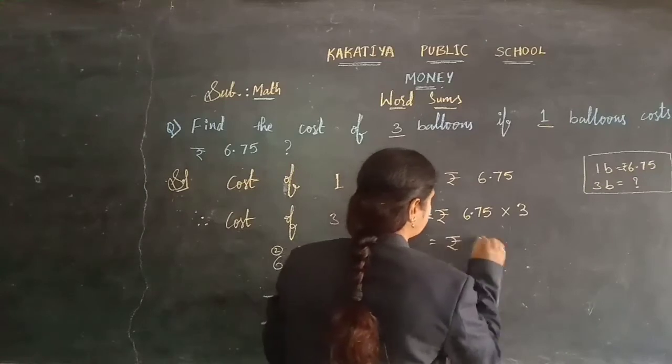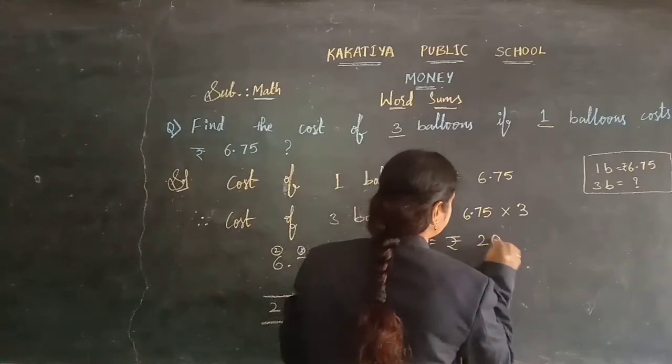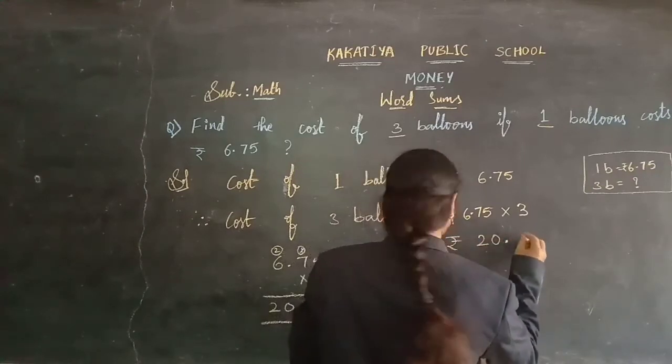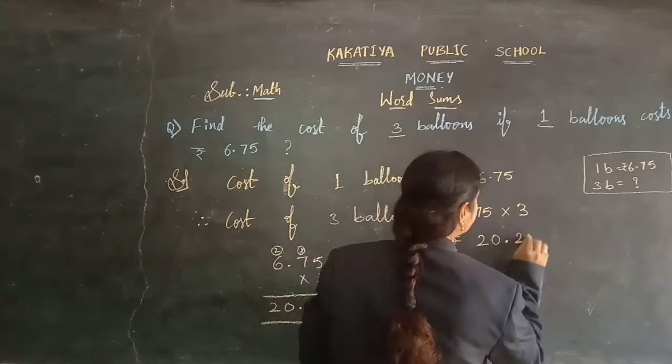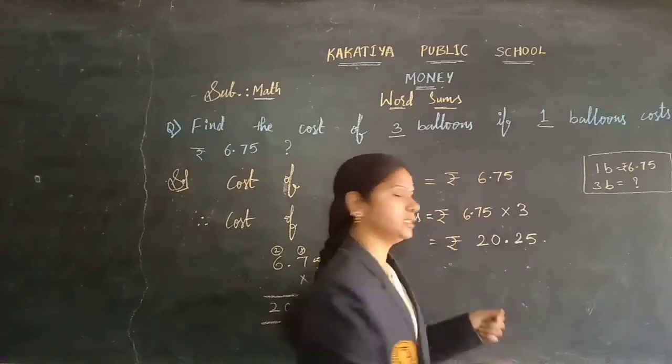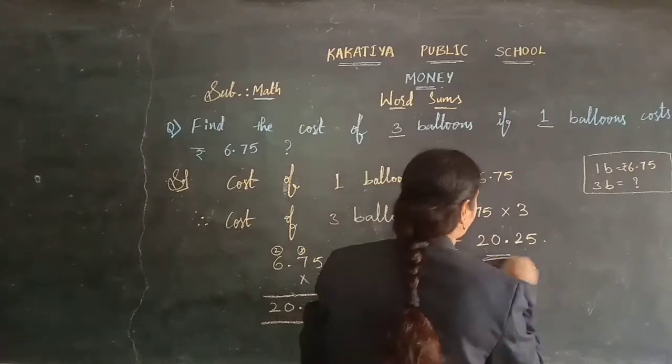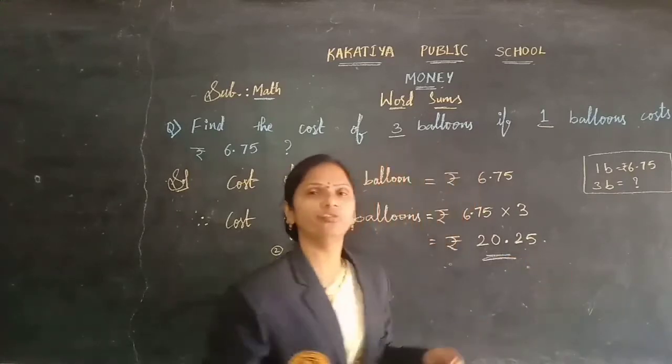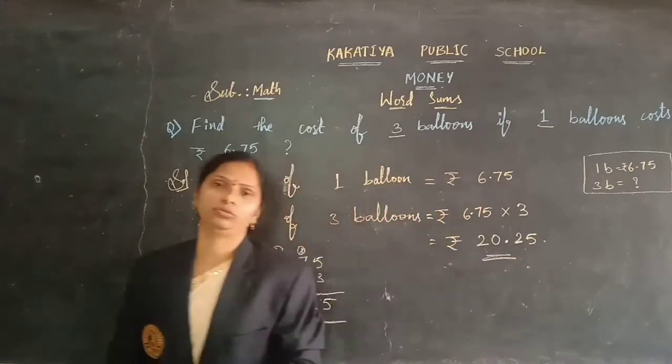Nothing but 20 rupees 25 paise. The cost of 3 balloons is 20 rupees 25 paise. This is the amount for 3 balloons.